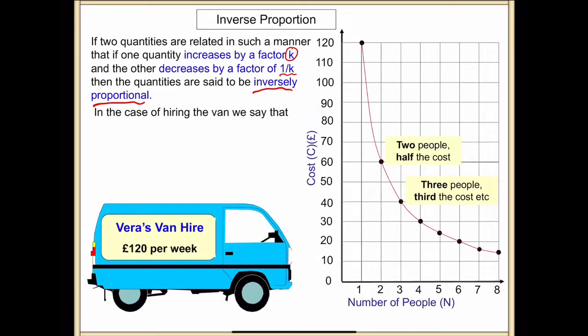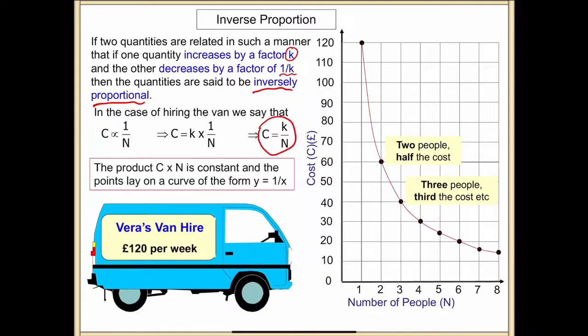In the case of hiring the van, we say that the cost is inversely proportional to the number of people. So C equals k over N, therefore we could write it in this way: C equals k over N. The product C times N is the constant, and the points lie on the curve of the form y equals 1 over x. This is when we talk about them being inversely proportional.